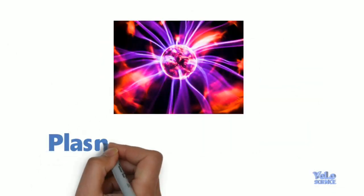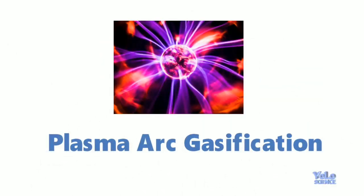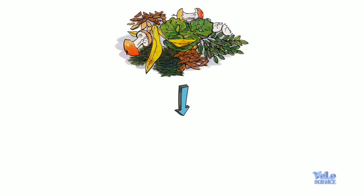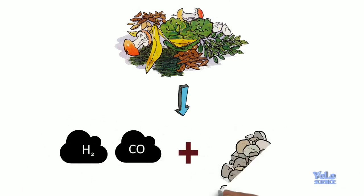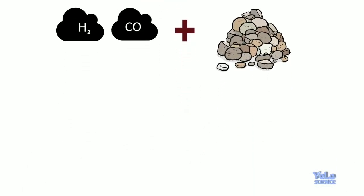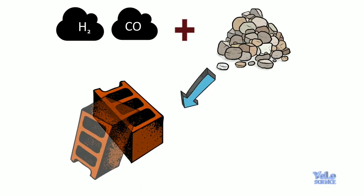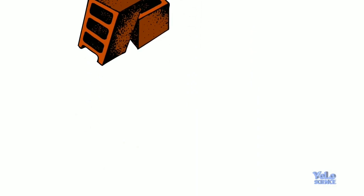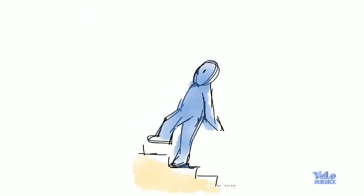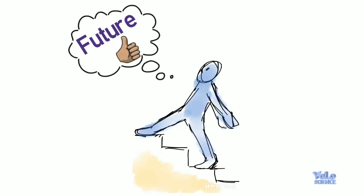Another process known as plasma arc gasification catalyzes organic matter into synthetic gases and molten slag. The slag can then be used as a solid for construction material and other purposes. These processes are still in development stages so we can hope more from them in the future.